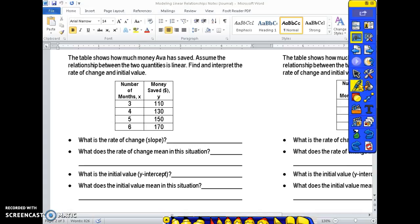All right example two. The table shows how much money Ava has saved. Assume the relationship between the two quantities is linear. So assume that there is a constant rate of change. Assume that we can write this in slope-intercept form. Find and interpret the rate of change and the initial value.